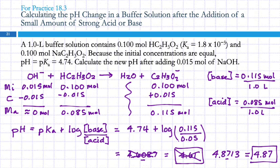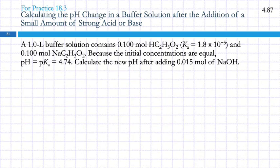So what does it mean that 'because the initial concentrations are equal, pH equals pKa'? Looking at the Henderson-Hasselbalch equation: if the base and acid concentrations are equal to each other, that fraction is 1, and log(1) = 0. So if the concentrations are equal, pH = pKa. We'll revisit that again later.